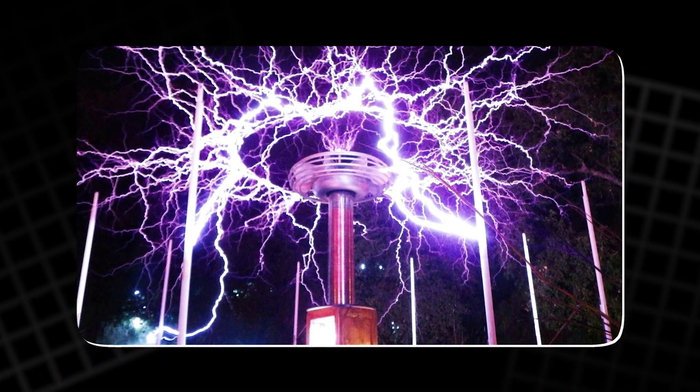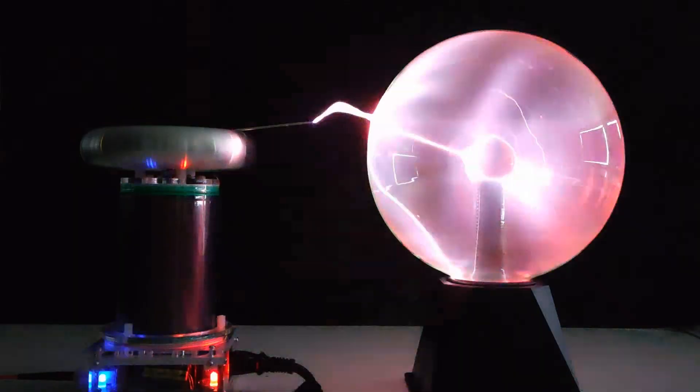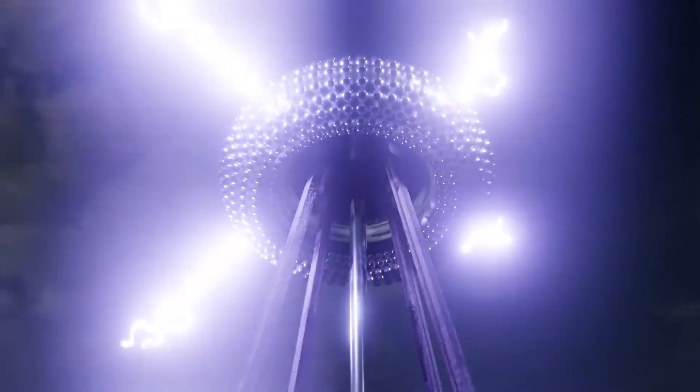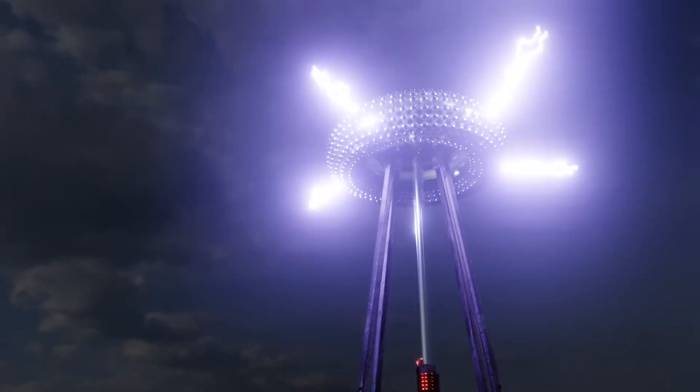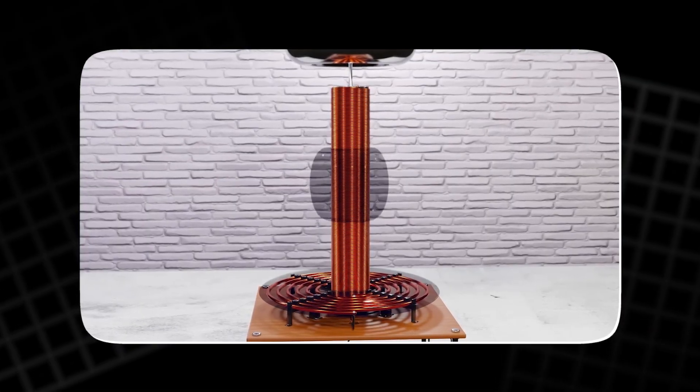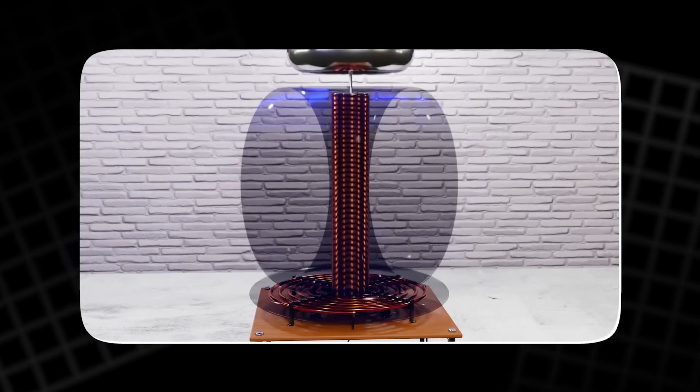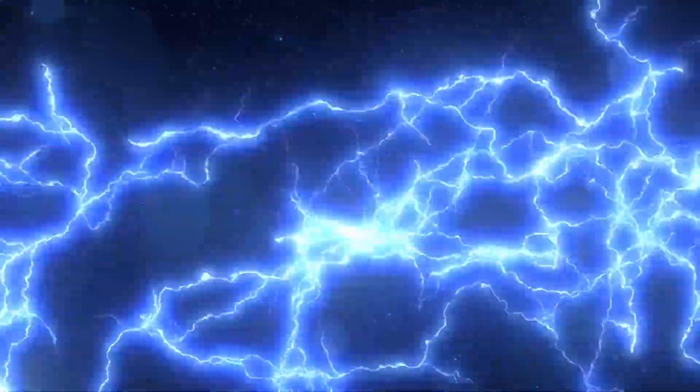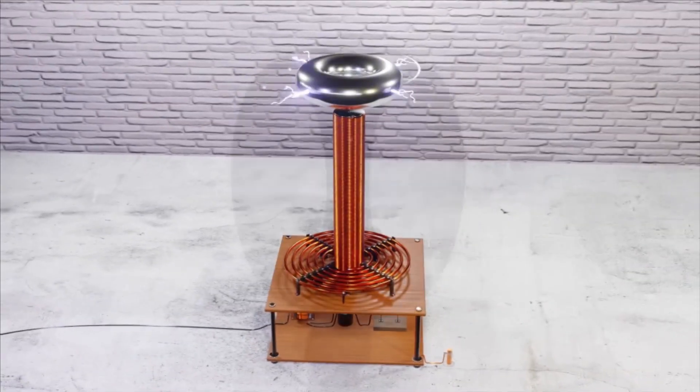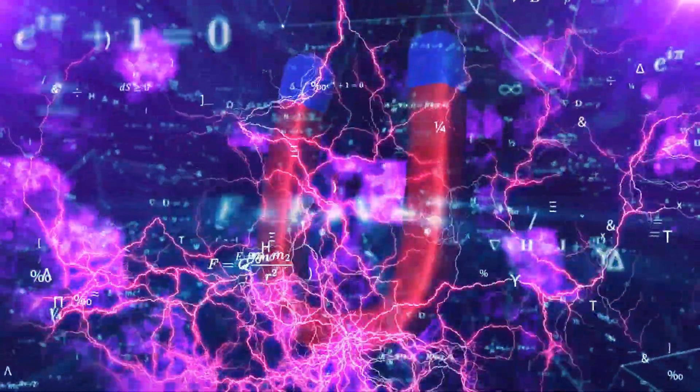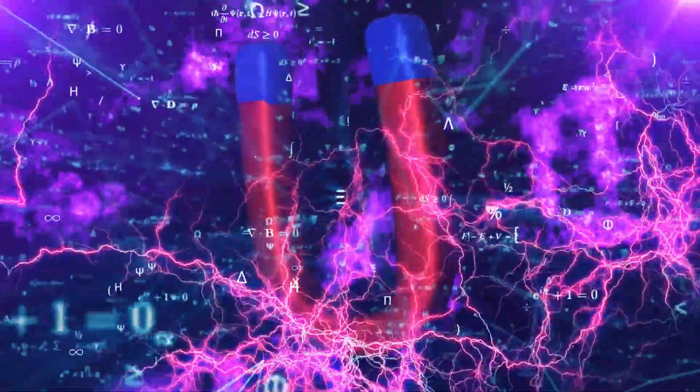Tesla coils, apart from producing these brilliant displays, also demonstrate the principles of electromagnetic induction and resonance. Inside the coil, alternating current rapidly builds up a high voltage, often reaching hundreds of thousands of volts. The coil's secondary winding is designed to create resonance, amplifying the voltage to the point that it ionizes the surrounding air. This is what causes the characteristic electrical arcs and sparks that leap from the coil's tip. When a glass tube containing a noble gas is brought near the coil, the emitted electromagnetic energy excites the gas inside without any physical connection.